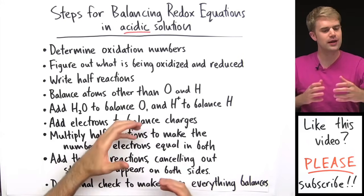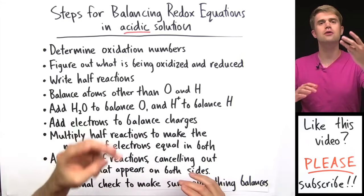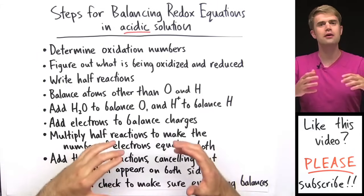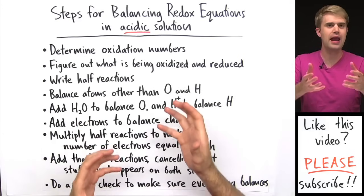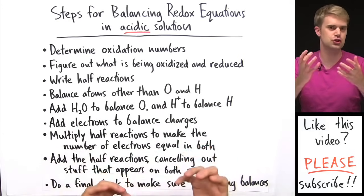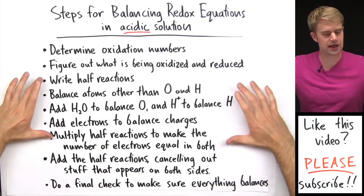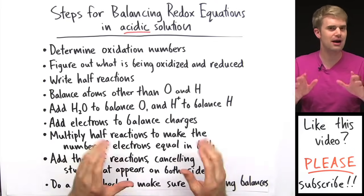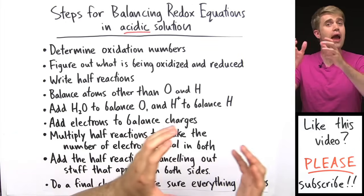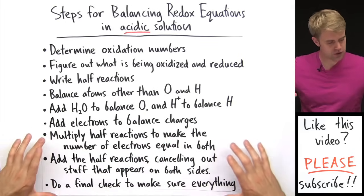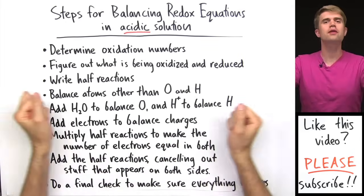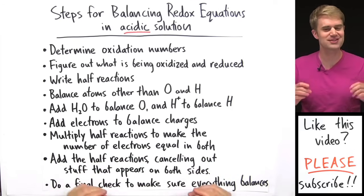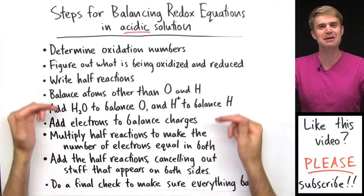I like to think that we can kind of break these steps down into three stages. In the first stage, we determine oxidation numbers for the elements and we look at how the oxidation numbers change. Then in the second stage, we write half reactions and we balance each half reaction for atoms and for charge. Then in the third and last stage, we put the half reactions together. So let's balance this equation. We'll go one step at a time.